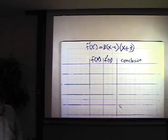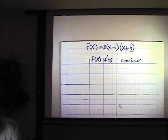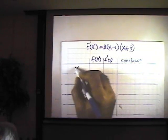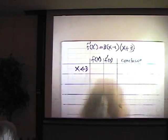So we set up a chart. We can organize our critical points and the intervals which f prime of x is changing signs. So we have critical points x equals 1, x equals negative 3. The smallest one, x less than negative 3.